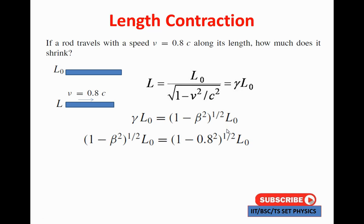We know v equal to 0.8c, so v/c equal to 0.8, meaning beta equal to 0.8. Substituting beta-squared equal to 0.8-squared gives L equal to (1 minus 0.8²) to the power 1/2 into L-naught. The value is 0.6 into L-naught.